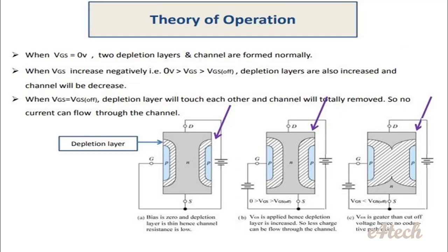The drain-source has a positive supply and source is connected. The gate-source voltage VGS is 0V. When VGS is equal to 0, two depletion layers and the channel are formed normally — we have a channel, two depletion regions, and a normal channel. Then VGS is increased negatively.